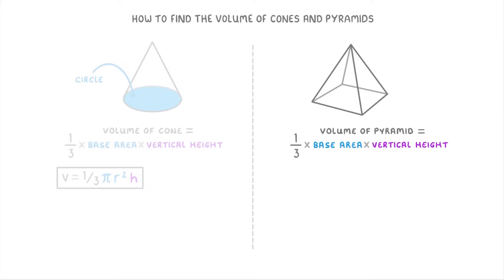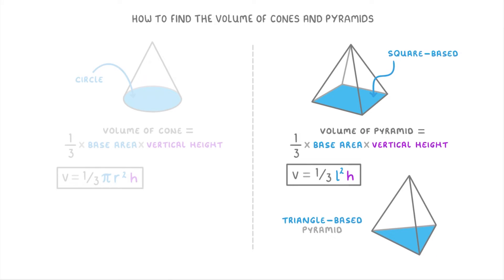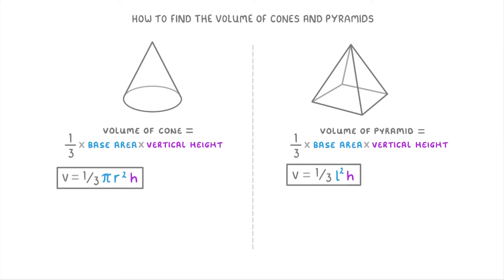For pyramids, the formula for the base depends on what type of pyramid you have. For example, this pyramid is a square-based pyramid, so for the base area we just use the area of a square, which is length times length or length squared, giving us V = (1/3)l²h. But if we had a different base, like in this triangle-based pyramid, then we'd have to use a different base area — in this case, the area of a triangle.